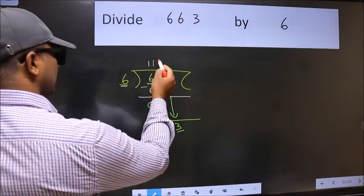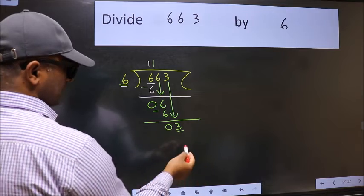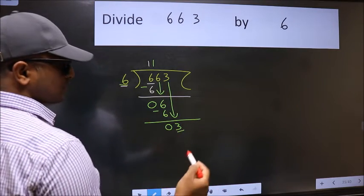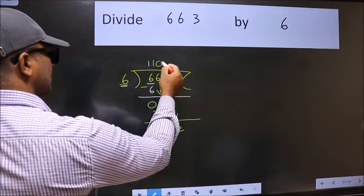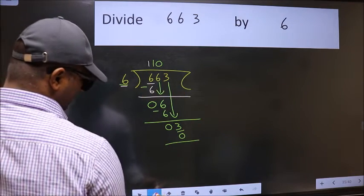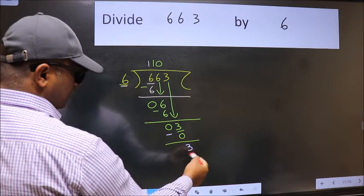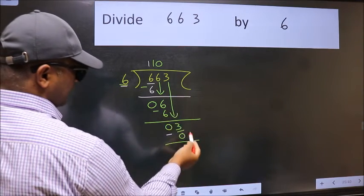So 6 into zero equals zero. Now we subtract, we get 3. Over here we did not bring any number down, and 3 is smaller than 6, so now we can put dot and take zero.